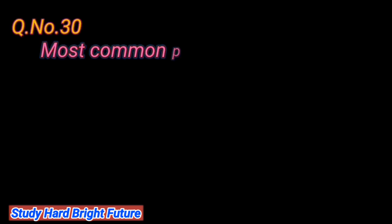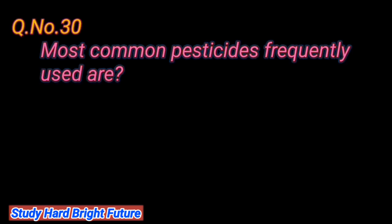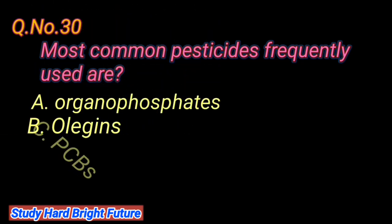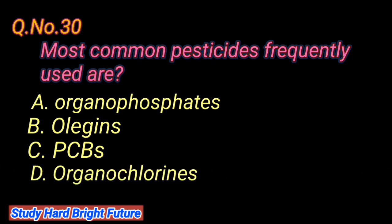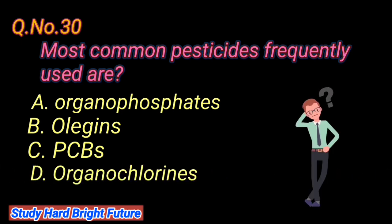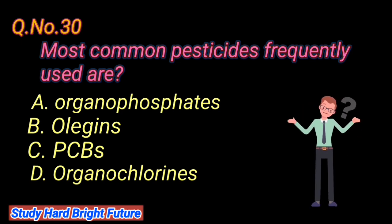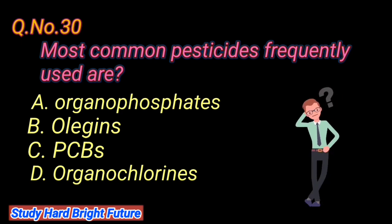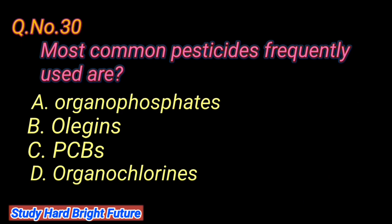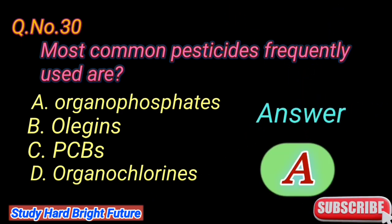Question number 30: Most common pesticides frequently used are. A. Organophosphates, B. Organics, C. PCBs, D. Organochlorines. The right answer is A. Organophosphates.